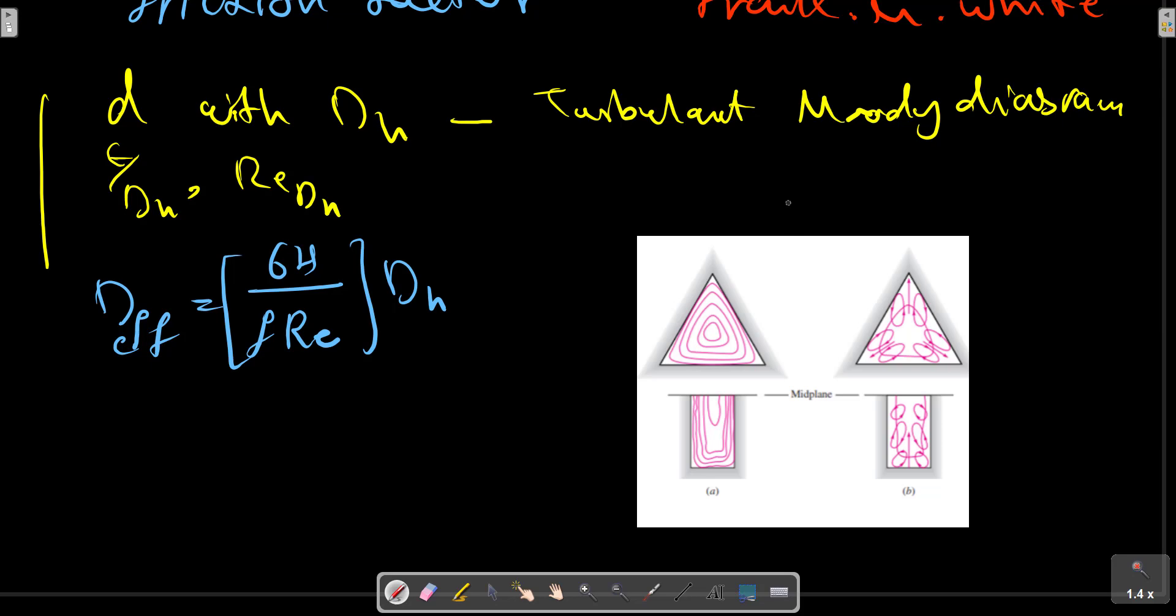We can use the previous relation for non-circular cross-sections. For example, shear forces at these points can be calculated. This is the end of this section. The next section is about multiple pipe systems.